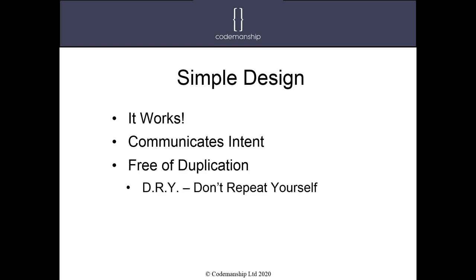If you let too many examples of duplication build up, in the zero-sum game of software development with limited time and resources, the more time it takes to refactor, the less likely we'll actually do it. So there's a sweet spot — often referred to as the Rule of Three. That's not a hard and fast rule; sometimes two examples is enough, sometimes you need more than three. But averaging it out, around three examples gives a good idea of what the pattern is and what the abstraction needs to be.